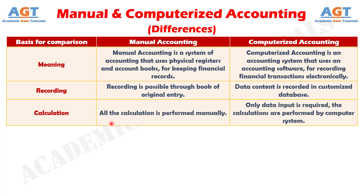Number 3. In manual accounting, all the calculations — that is, addition, subtraction, etc. — with respect to the transactions are performed manually. In contrast, in computerized accounting, there is no need to perform calculations, as the calculations are performed by the computer automatically.